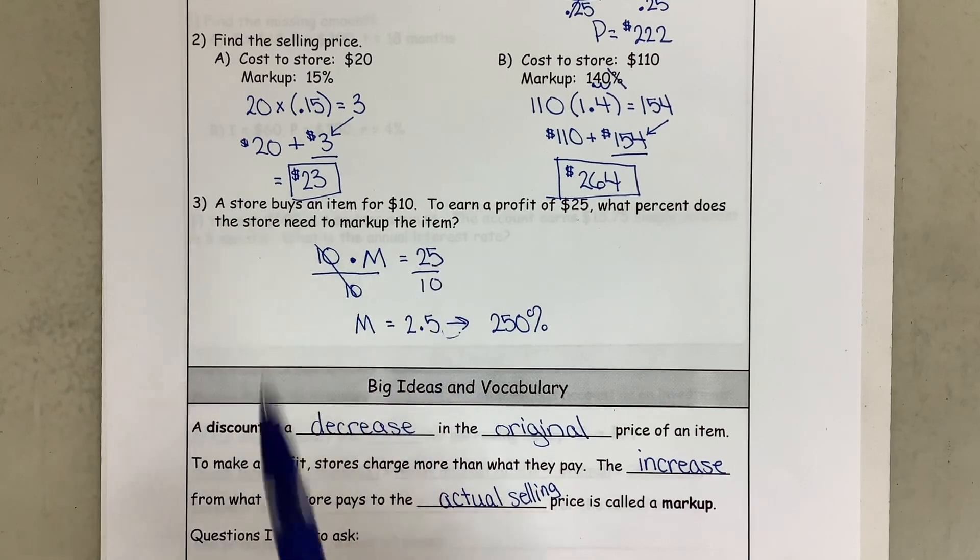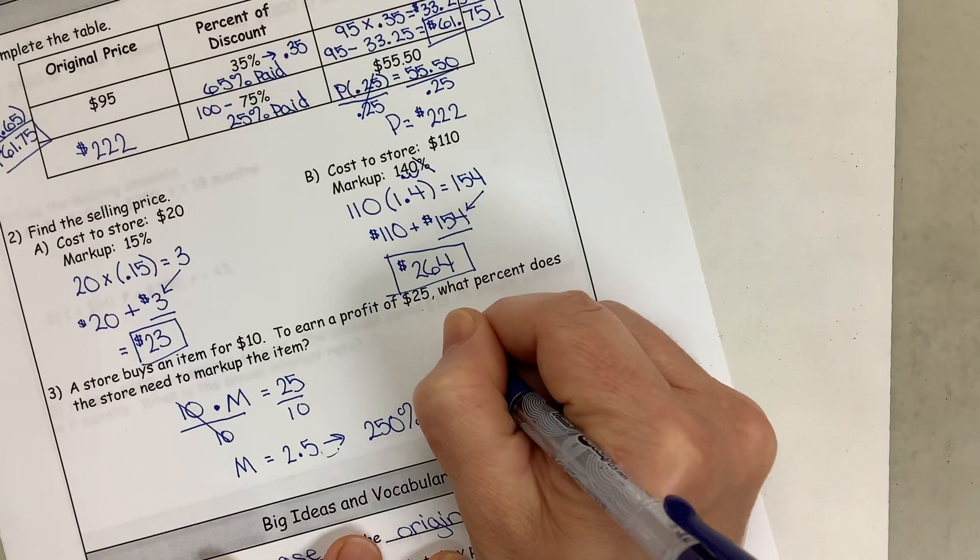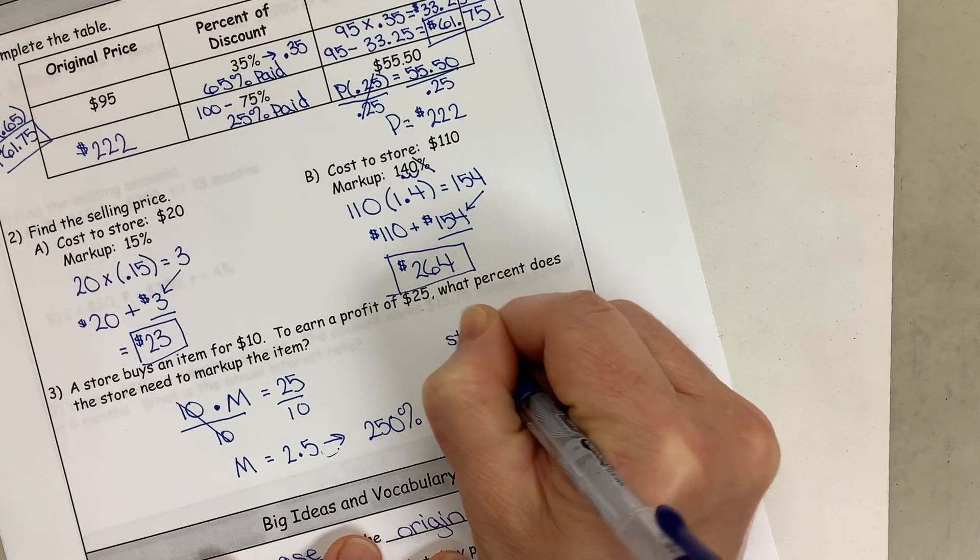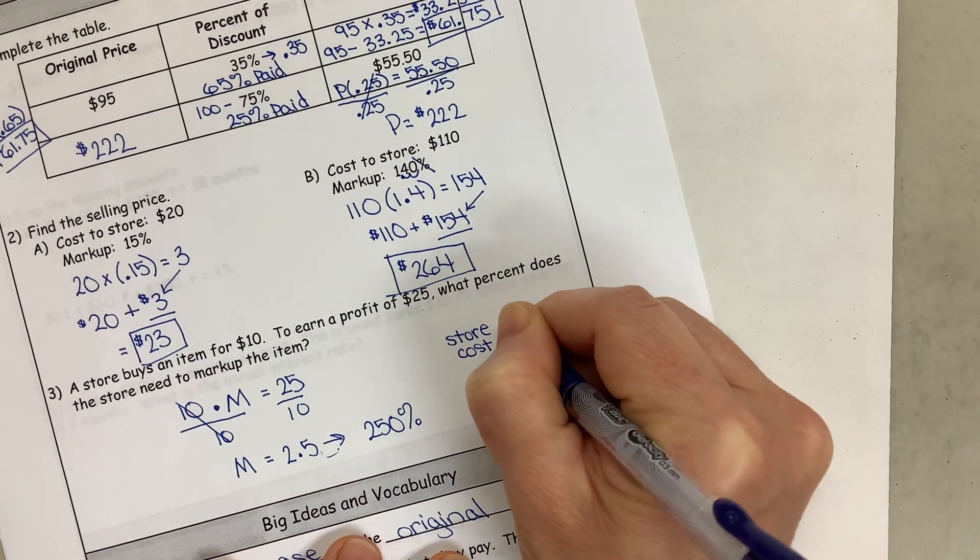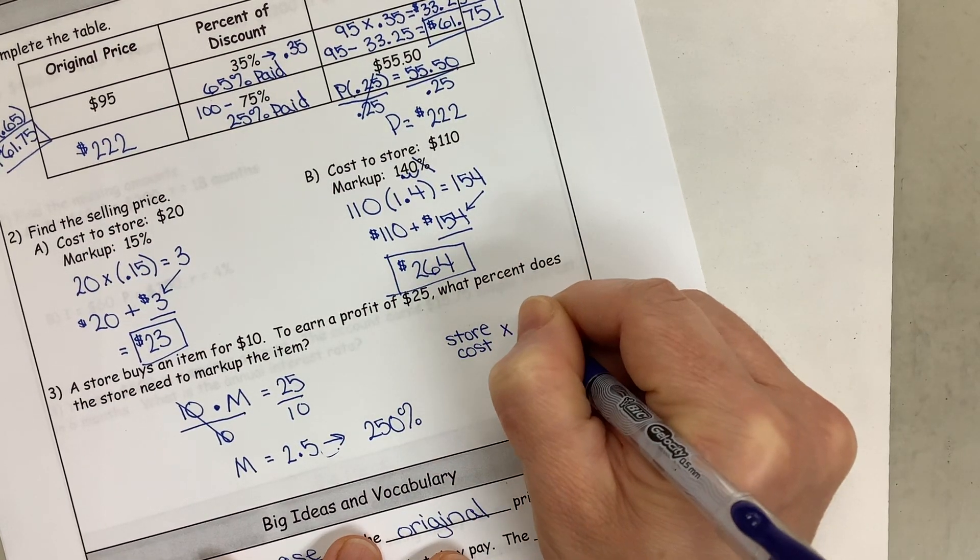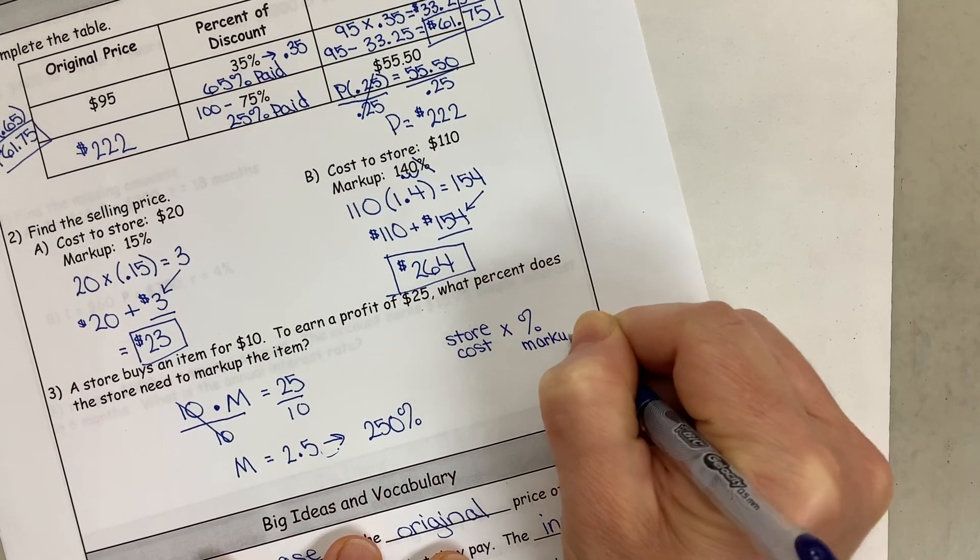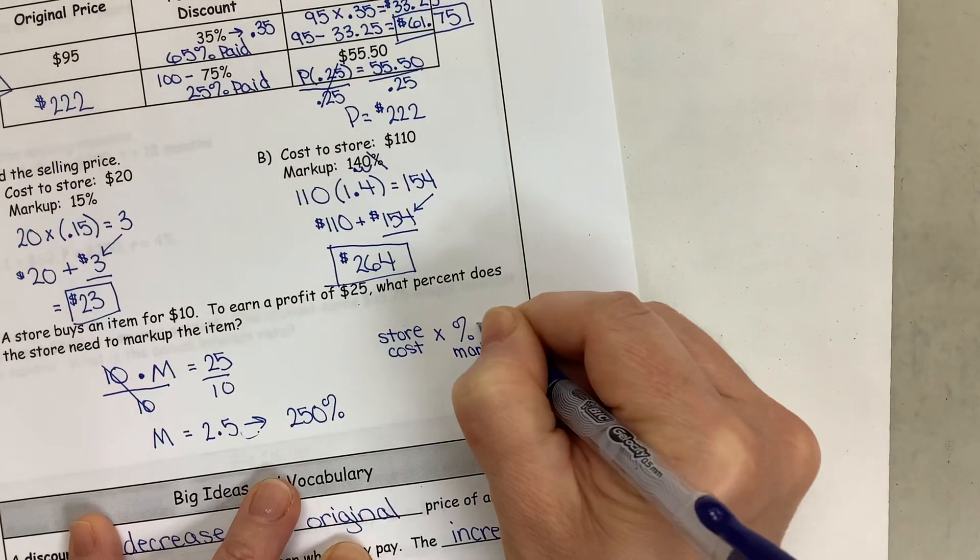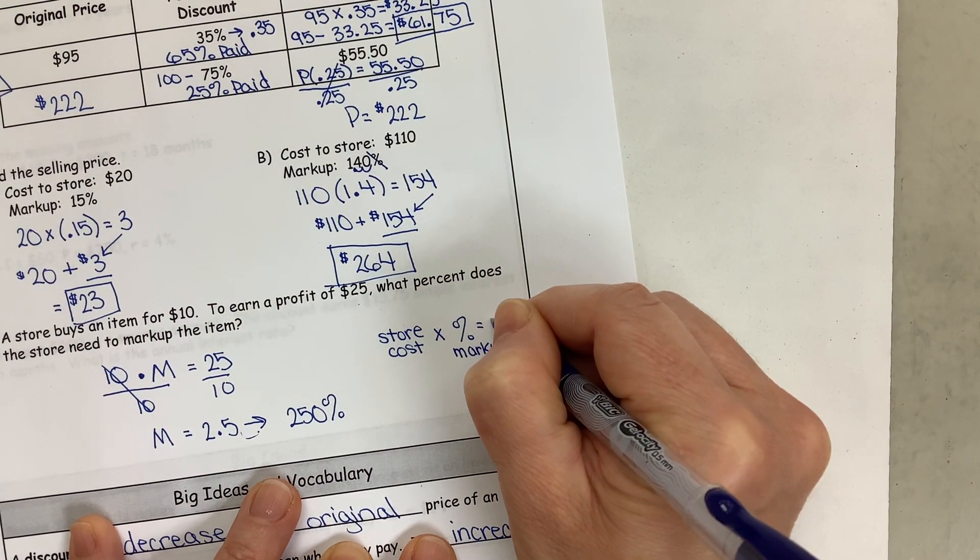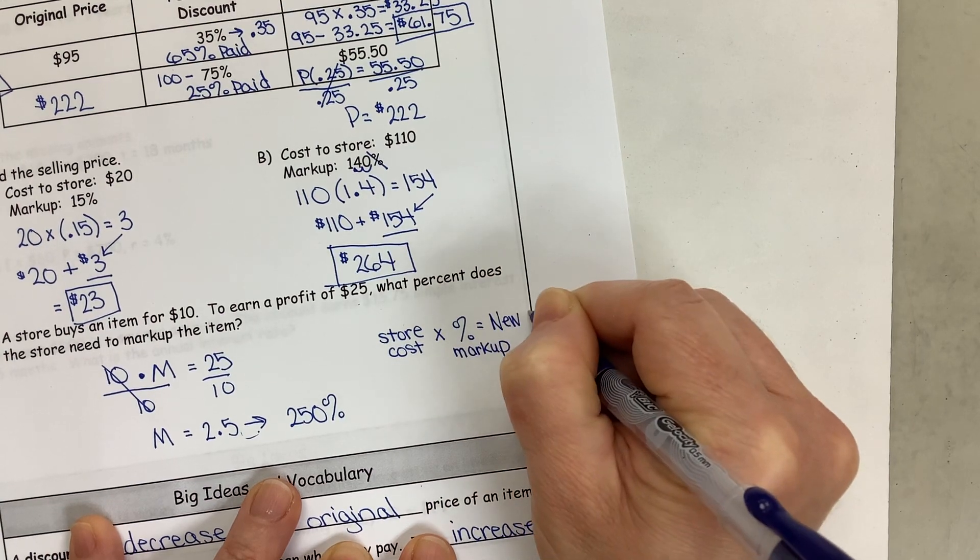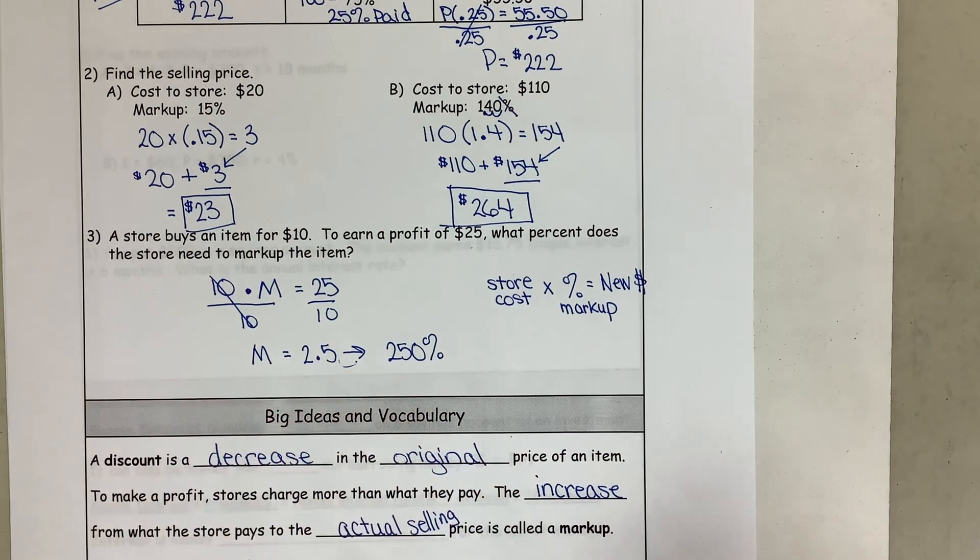So what we did here was the store cost here was the markup, here was the profit. So here was the store amount, the markup, and the profit. So let's go ahead and write that down. So what we've been using is the store cost, which is really the actual cost, times the percent markup, and that gives us the new price.